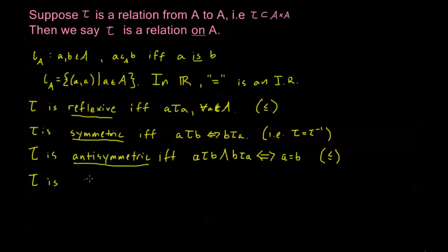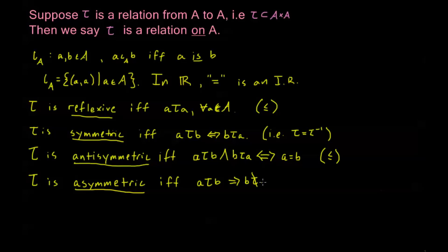Tau is called asymmetric — not the same as antisymmetric — if and only if A tau B implies that B does not tau A, and the other direction as well. An example of this would be strictly less than: two is strictly less than five, which means that five is not strictly less than two.